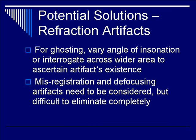To minimize or eliminate ghosting, you can vary the angle of insonation of the transducer, or interrogate across a wider area so you can see the artifact come in and out of existence — confirming it is an artifact and not an anatomical anomaly. Misregistration and defocusing artifacts also need to be considered; typically they're not as serious, but they are also difficult to eliminate completely with these techniques.